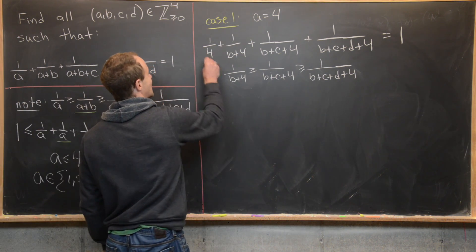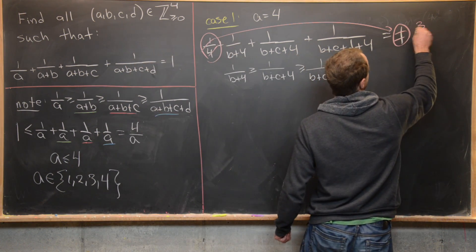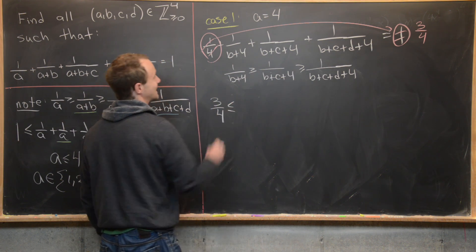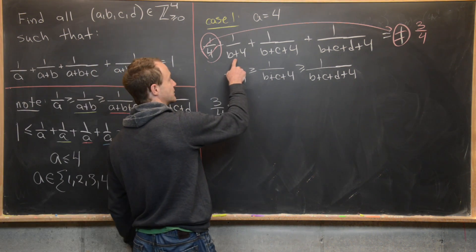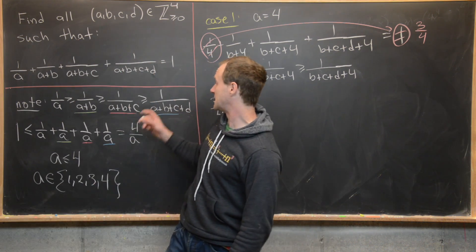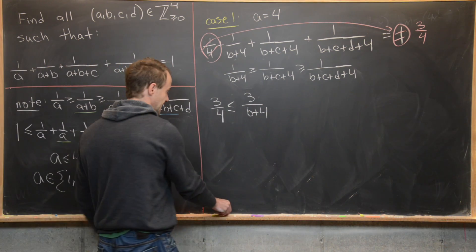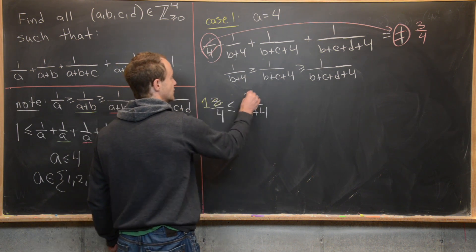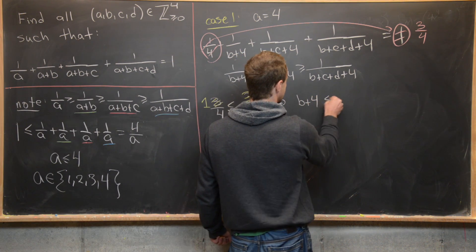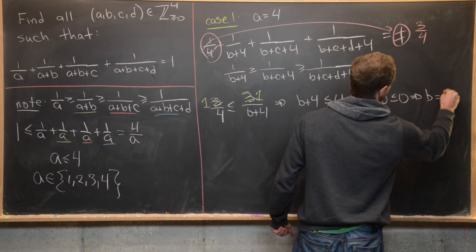Moving 1/4 to the other side gives 3/4 on the right. Then we have: 3/4 ≤ 1/(B+4) + 1/(B+4) + 1/(B+4) = 3/(B+4). Dividing both sides by 3 gives 1/4 ≤ 1/(B+4), so B+4 ≤ 4, which tells us B ≤ 0, meaning B = 0.